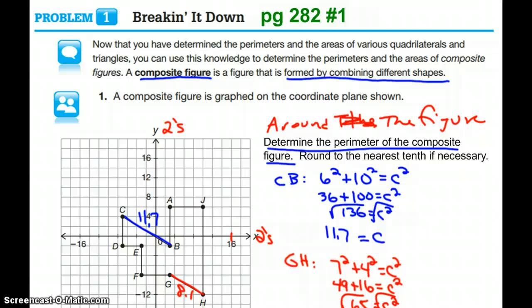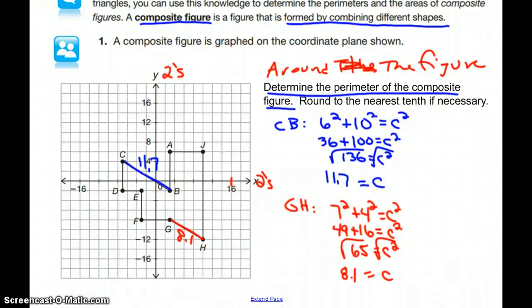Now going back and finishing the perimeter, we found our angled sides, and so now going around the rest of the figure, from A to B I can count 4 boxes, so that is a length of 8. From A to J I have a half of a box and 3 full boxes, so that's a length of 7.